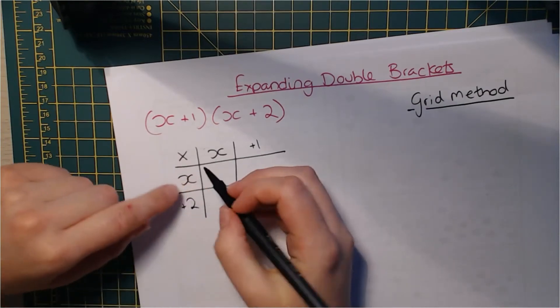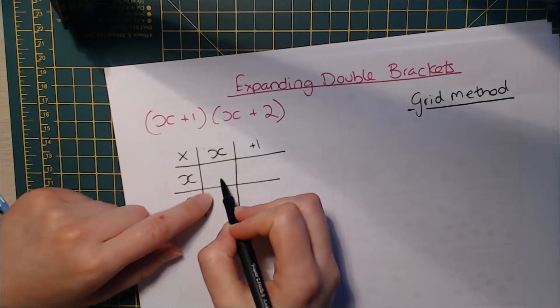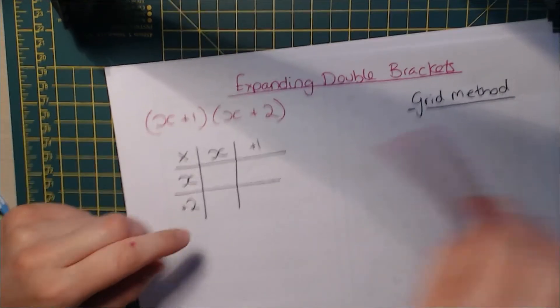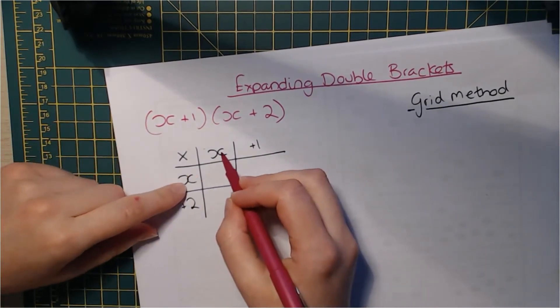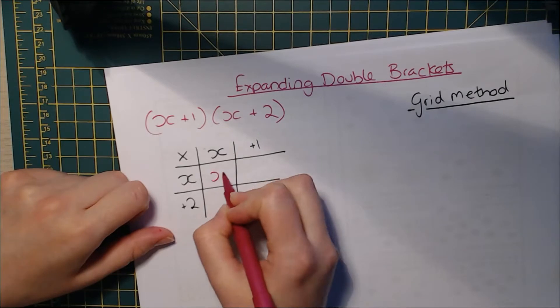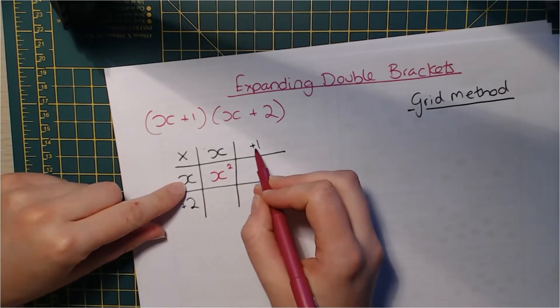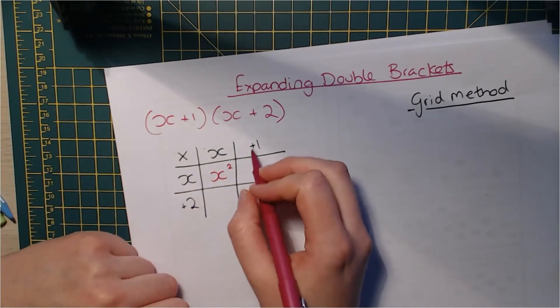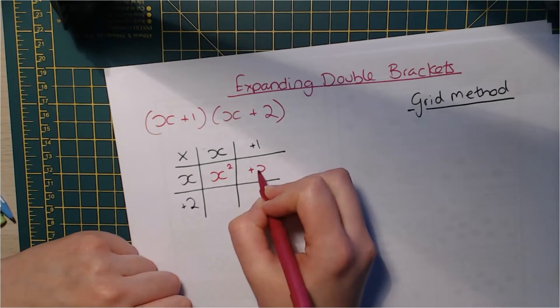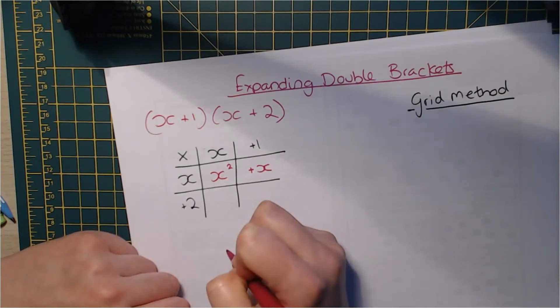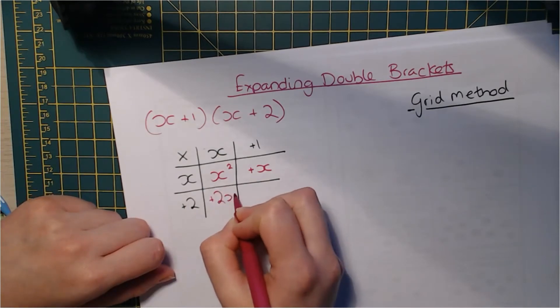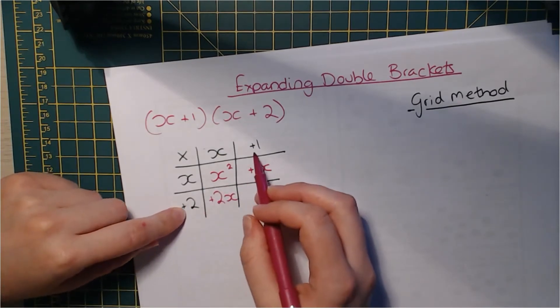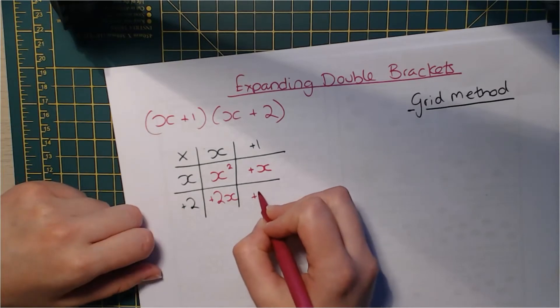And then what I'm going to do is I'm just going to multiply everything together. So this square here, let me just grab another color so you can see what I'm adding in as the answer. x multiplied by x, x squared. x multiplied by positive one is positive one x. We just write positive x so we don't need the one. x multiplied by positive two is positive two x. x and positive two multiplied by positive one is positive two.